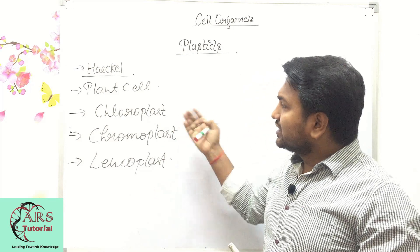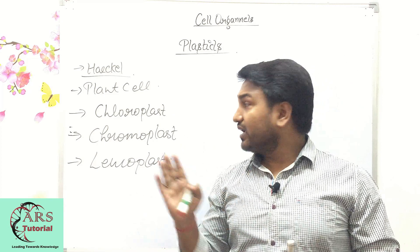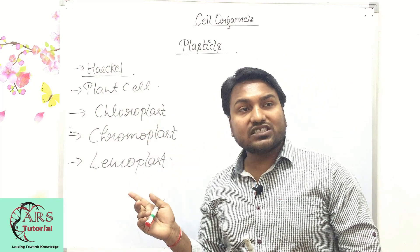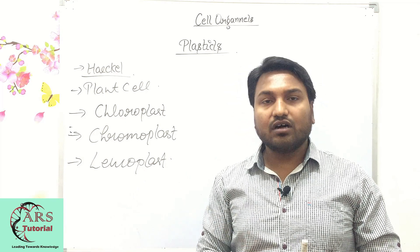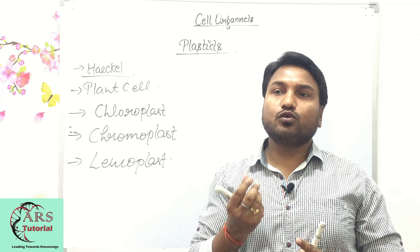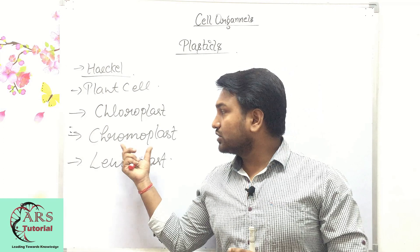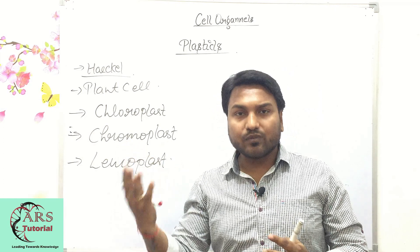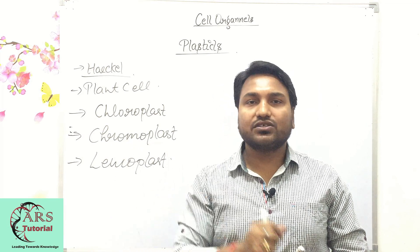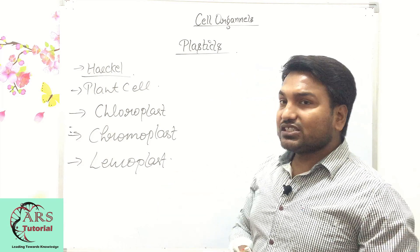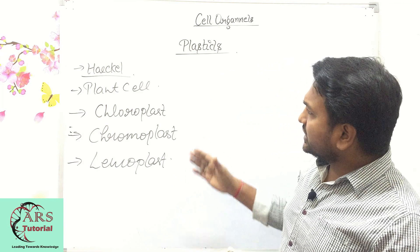Chloroplast is responsible for the synthesis of food and is found in the green portions of plants. Chromoplast is found in the colored portions of plants like fruits and flowers — it is responsible for coloration. Leucoplast is found in roots and non-colored parts and is used for storage of food material.